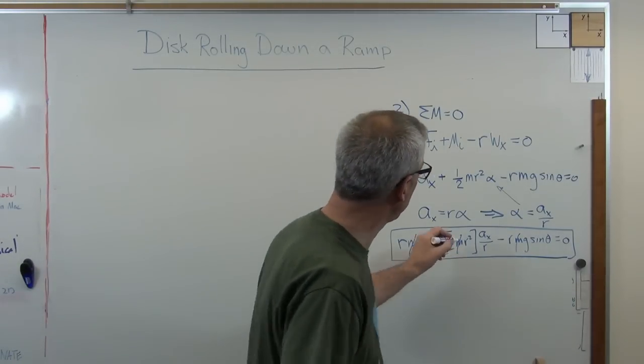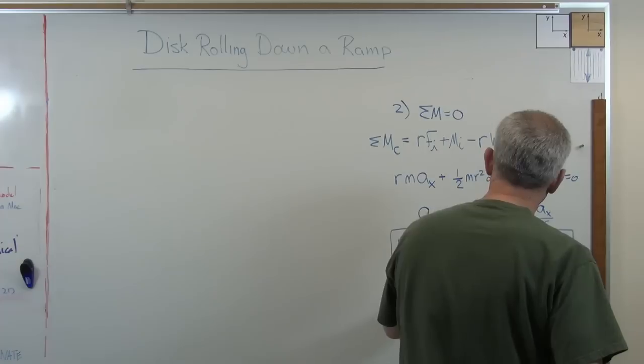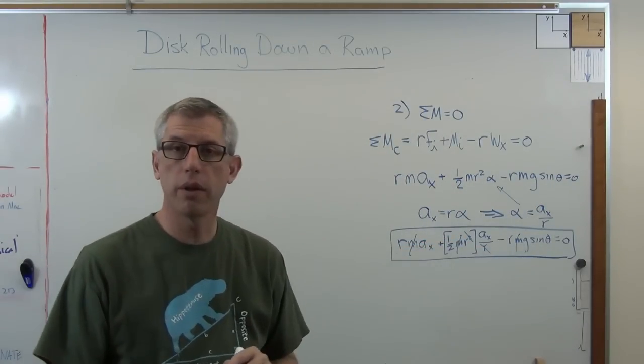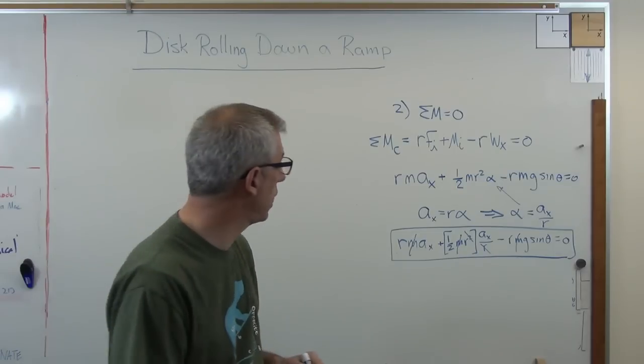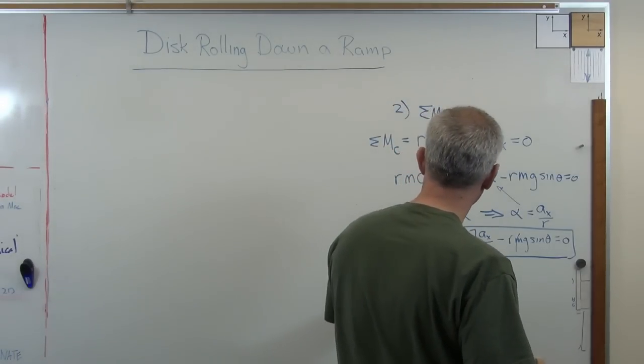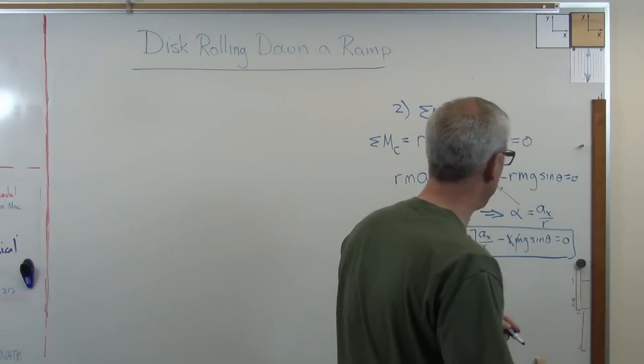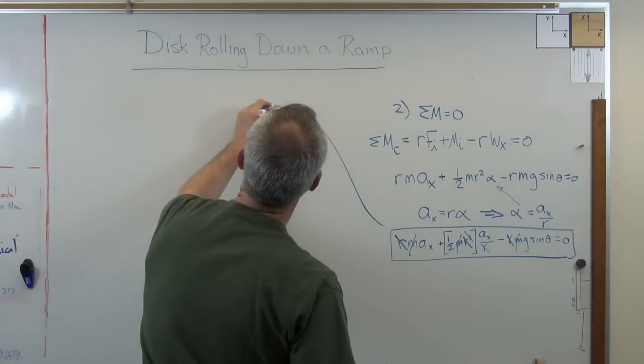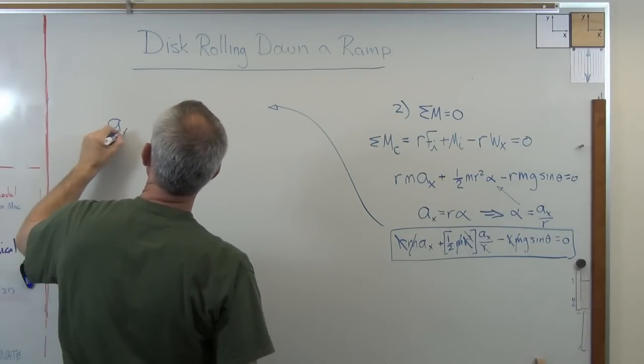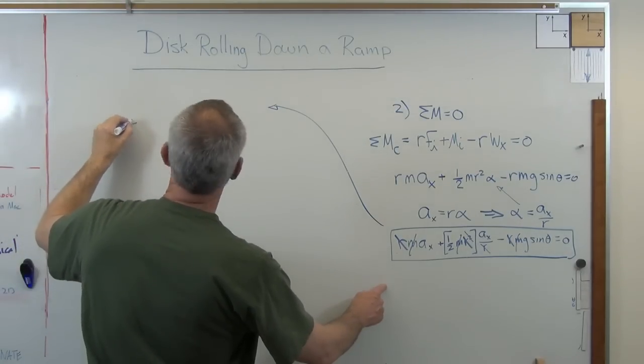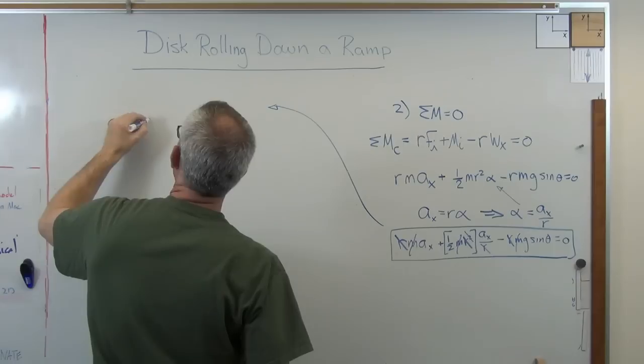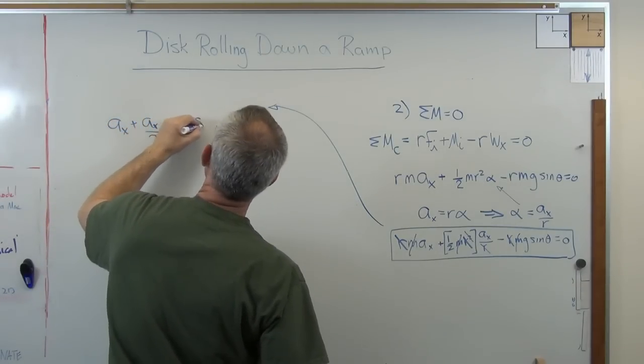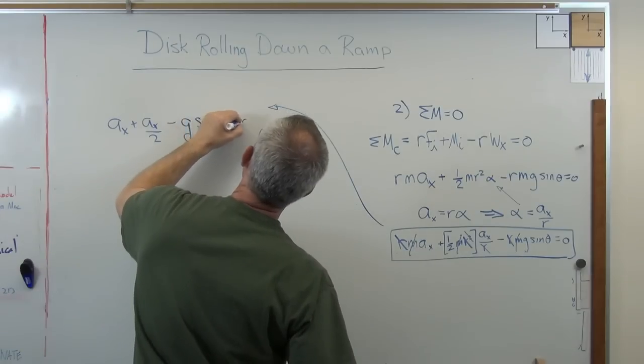Turns out R also appears in every term. I've still got an R in every term. So I'm going to get rid of it. What I've done is divide through by R. When you do that, let's go back up here. What I now get is A sub X plus A sub X over two minus G sine theta equals zero. Holy smokes. That is really simple. And look what doesn't appear in there. Mass doesn't appear in there. R doesn't appear in there.